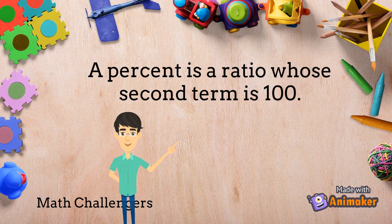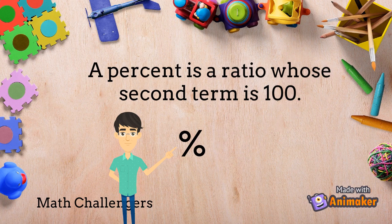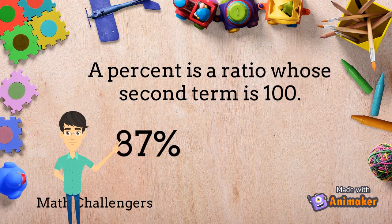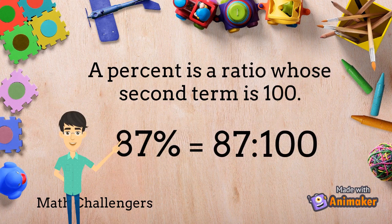A percent is a ratio whose second term is 100. We use this symbol for percent. For example, 87% means 87 is to 100, or 87 out of 100.